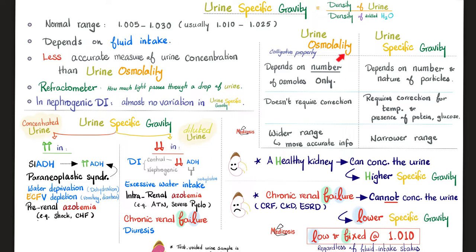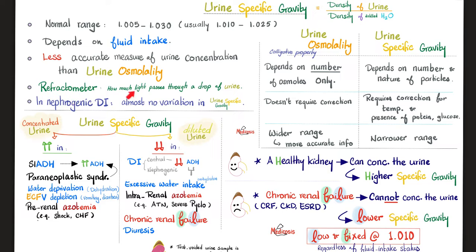Which one is more accurate? Urine osmolality. So why do doctors care about specific gravity? It's just faster to measure. To measure urine osmolality, you have to send the sample to the lab and request the osmometer test — urine osmolality is measured by an osmometer. Urine specific gravity is usually measured by a refractometer, which sees how much light passes through a drop of urine. If urine is dilute, more light will pass; if concentrated, less light will pass. The computer gives us a number ranging between the most dilute and the most concentrated.